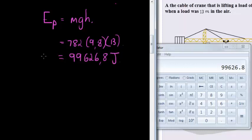That is what its potential energy... that does not look like a crane at all. Let's draw a very basic crane, rather it looks like a hangman than a crane. 13 meters up in the air, and here at the top, its potential energy is equal to 99626.8 Joules.